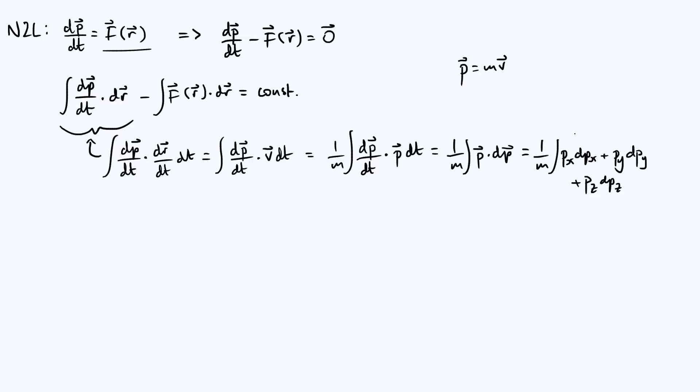Now when you integrate px with respect to px, you just get a half px squared. You're going to get identical terms for the y and z parts as well. So when you put all that together, keeping that factor of 1/m in the front there, you're going to get 1/(2m) times (px² + py² + pz²).